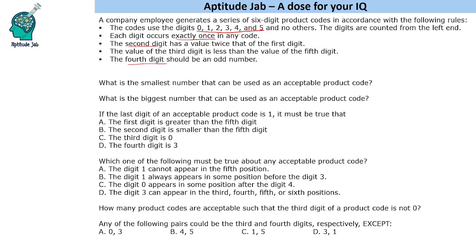The second digit has a value twice that of the first digit. So if the first digit is x, the second digit will be 2x. The value of the third digit is less than the value of the fifth digit, and the fourth digit is an odd number. These are the conditions, and we may have multiple product codes made out of these digits.